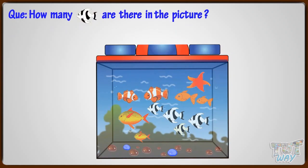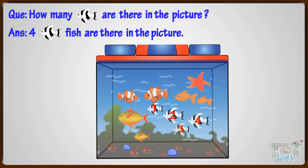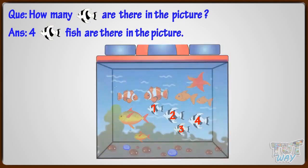How many black and white fish are there in the picture? Let's count. One, two, three, four. So four black and white fish are there in the picture.